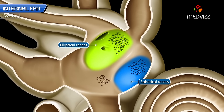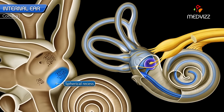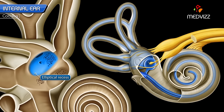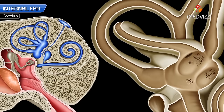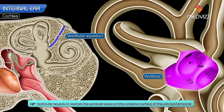The two recesses are separated by the vestibular crest, which splits inferiorly to enclose the cochlear recess. The spherical recess lodges the saccule and is perforated by foramina for the passage of the lower division of the vestibular nerve. The elliptical recess lodges the utricle and is perforated by foramina for the passage of the upper division of the vestibular nerve. Inferior to the elliptical recess, there is an opening for a bony canal called the aqueduct of the vestibule, which reaches the epidural space on the posterior surface of the petrous temporal.